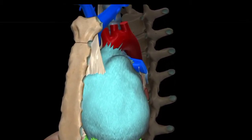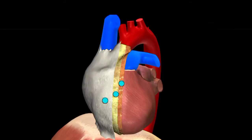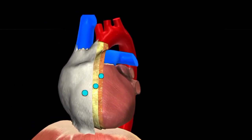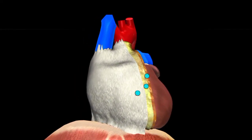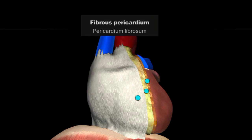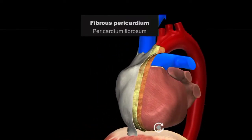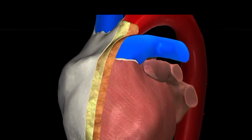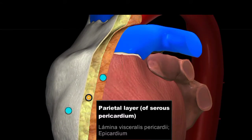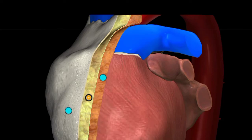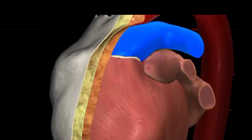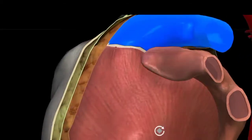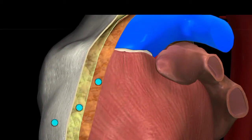Now we will discuss the layers of pericardium. Pericardium has two layers: fibrous pericardium and serous pericardium. The outermost layer is called fibrous pericardium — the white-colored one is fibrous pericardium. Below that is serous pericardium, which has two layers: the upper layer is called parietal pericardium (parietal layer of serous pericardium), and the lower layer is called visceral pericardium (visceral layer). This visceral layer touches the superficial surface of the heart.